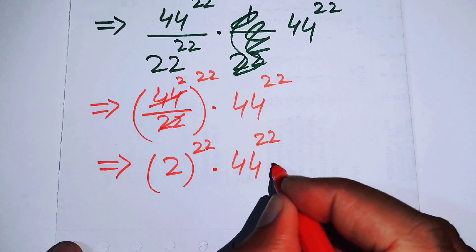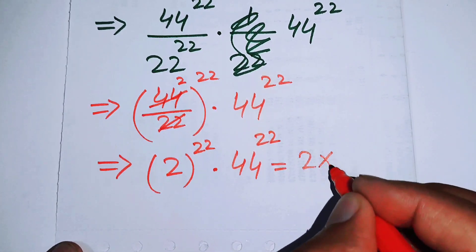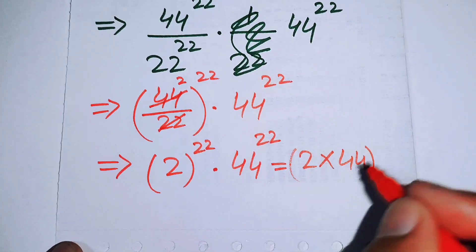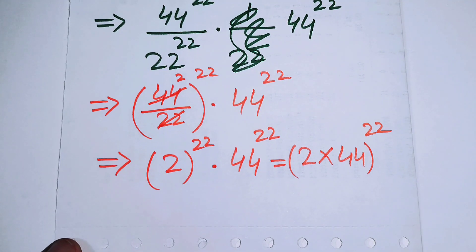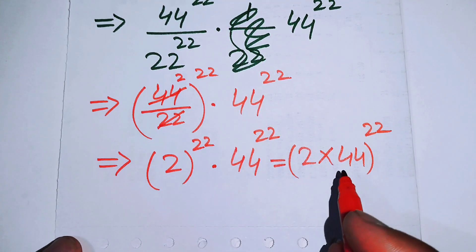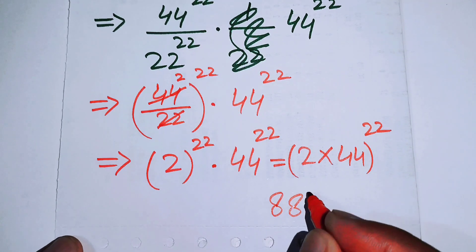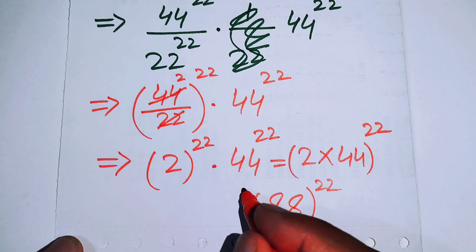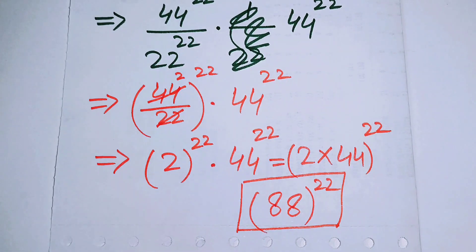Since the exponents of both terms are the same, we combine the bases: 2 times 44, raised to the power of 22. Multiplying 2 by 44 gives 88, so the final answer is 88 to the power of 22.